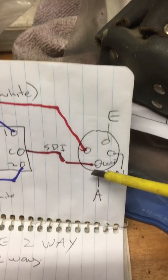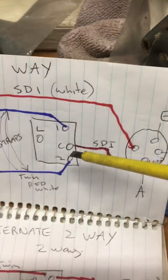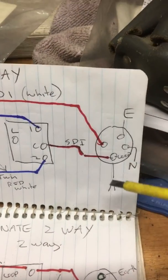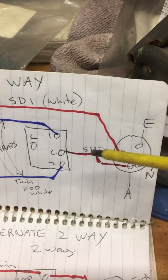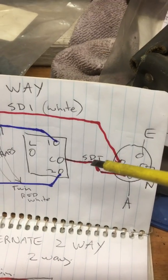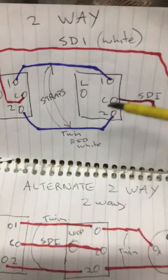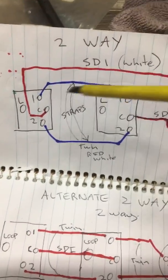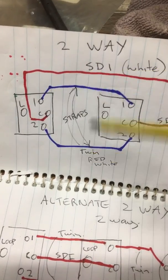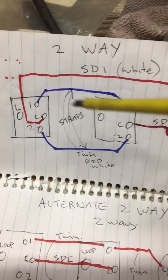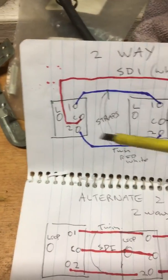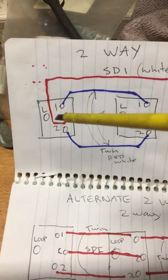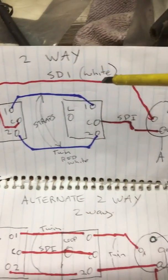From the switchboard loop to the switches via an SDI (single double insulated) into your common. Then from switch to switch is just twin, called straps, red and white. Then from the common of the second switch, just a single SDI back to your light terminal.